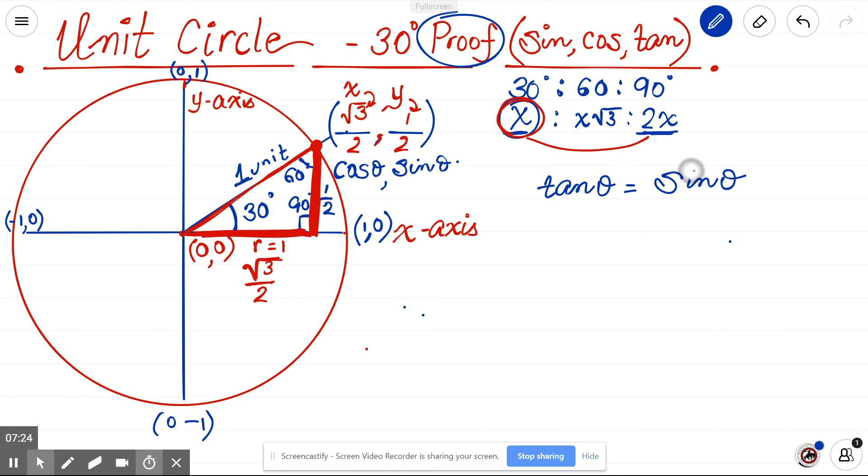So any time you need to calculate the tan, you divide sin value for that given angle divided by cos. So here, because cos 30 degrees is in question, our value will be tan 30 equals sin 30 over cos 30.